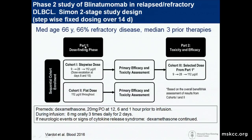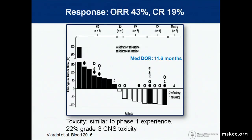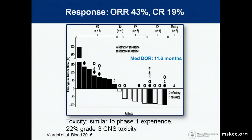That led to a phase two study with refractory disease and a median of three prior therapies. There were two cohorts — a flat dose was attempted, but two out of two patients had toxicity and that arm was closed. They went to a stepwise progression with continuous infusion at 9, 28, then 112 micrograms given daily, and that demonstrated confirmation of continued activity. The median duration of response for those responding was 11.6 months. Toxicity was similar to the phase one experience, with about one in five patients experiencing grade three CNS toxicity — this really does seem to be a class effect across agents that engage T-cells, whether CAR T-cells or bispecifics.